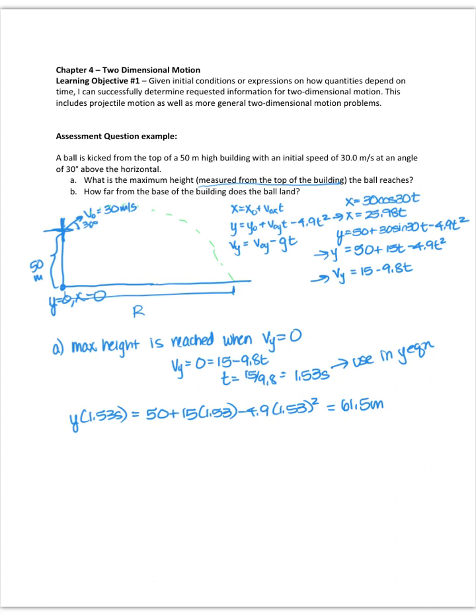But my question asked me to measure it from the top of the building. So I want to find the delta y, which is the 61.5 minus 50, because I want to basically measure from here to here.